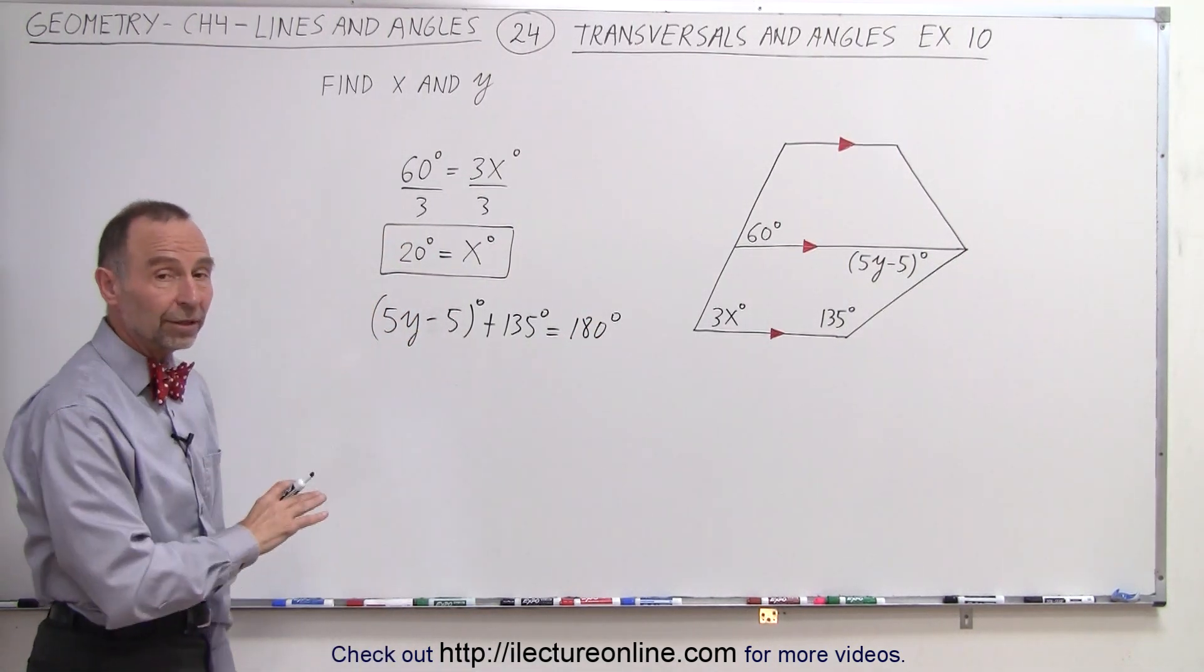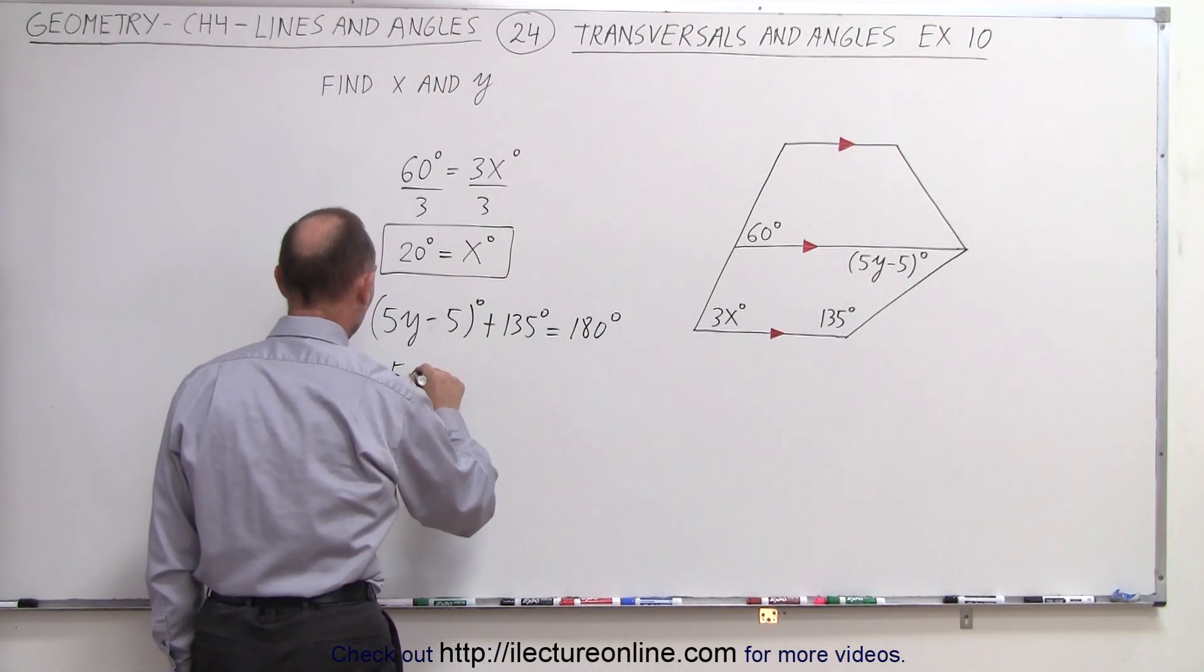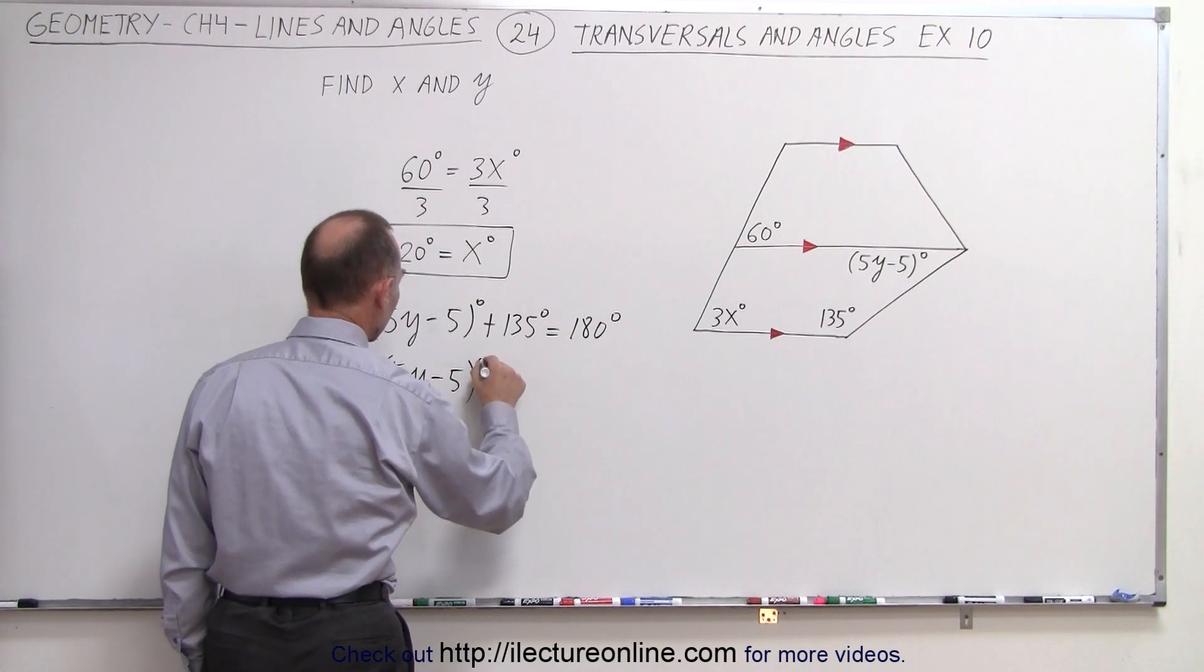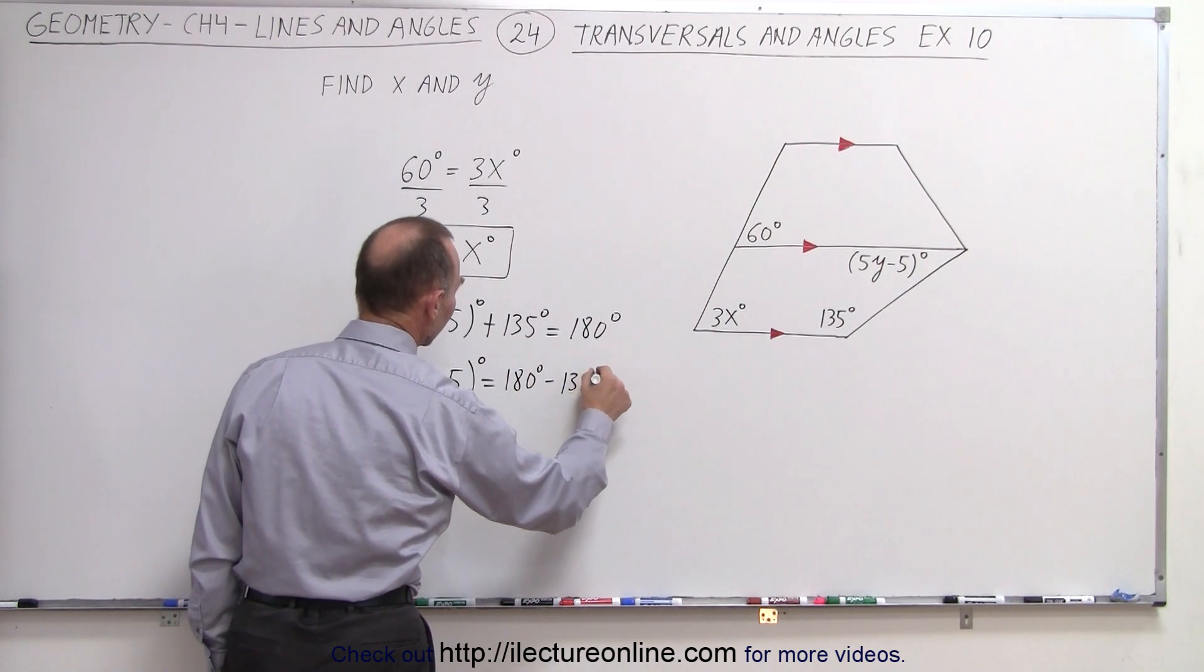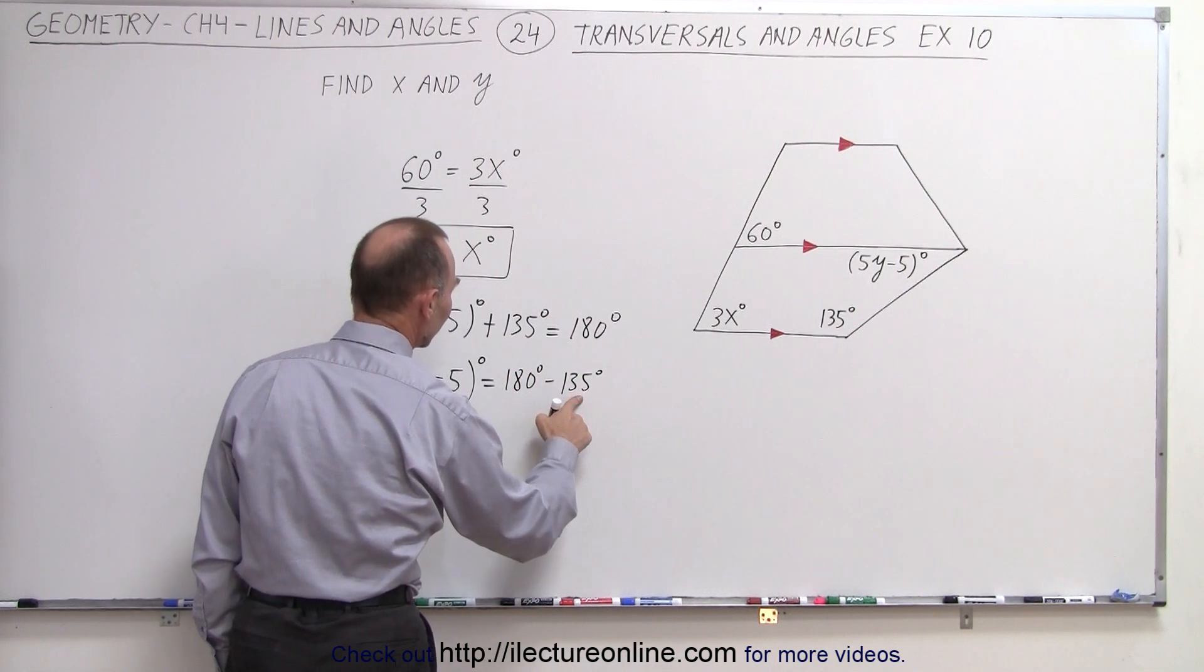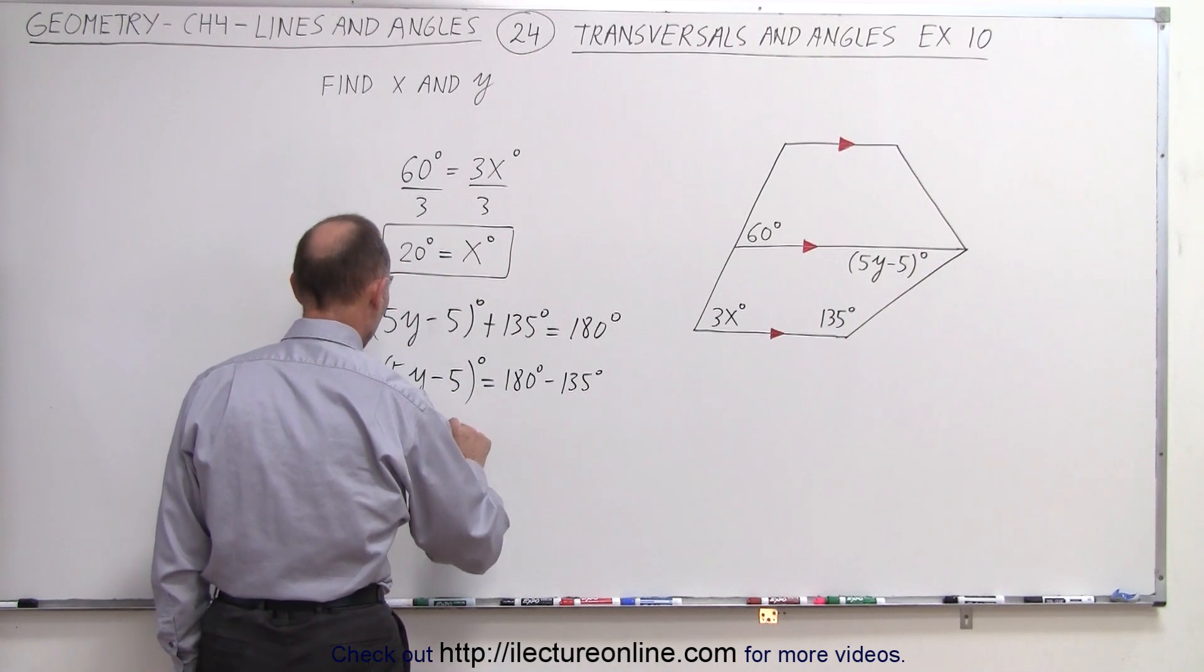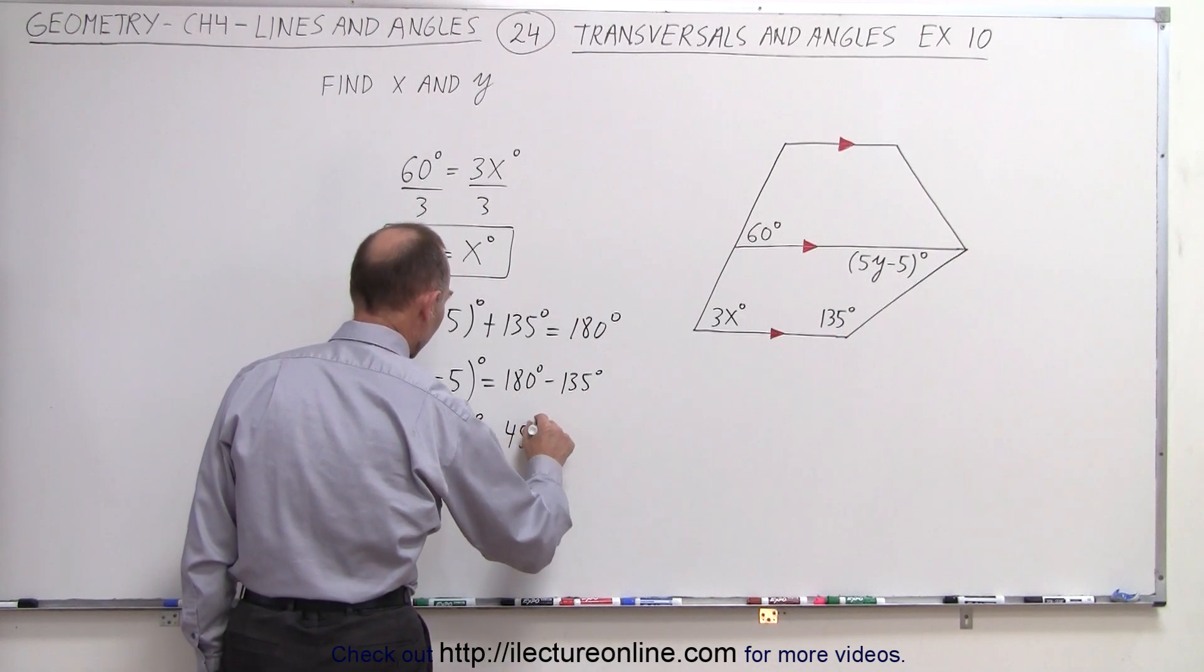Alright, first of all, we can get rid of 135 by moving it to the other side. So 5y minus 5 degrees is equal to 180 degrees minus 135 degrees. 180 minus 135 is 45 degrees. So 5y minus 5 degrees is equal to 45 degrees.